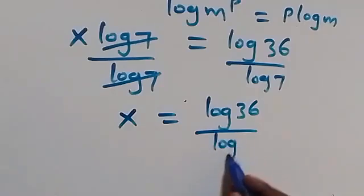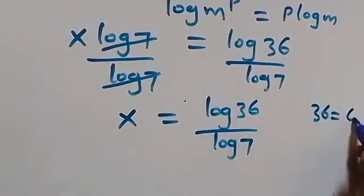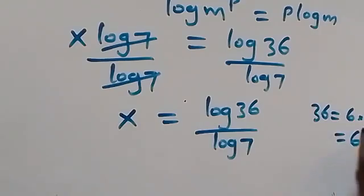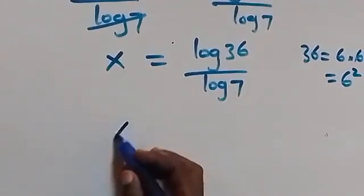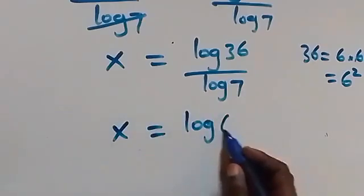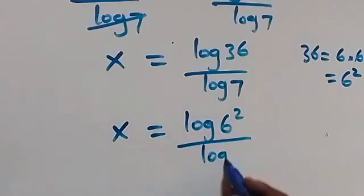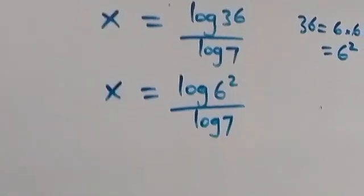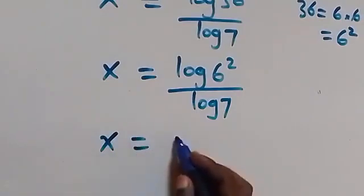We can also simplify this further, since 36 can be written as 6 times 6, which is also 6 squared. Then what we have becomes x equals to log of 6 squared over log 7.